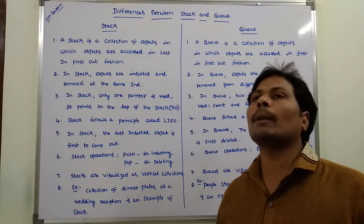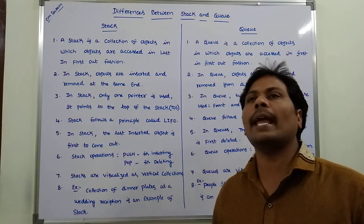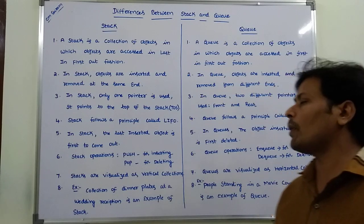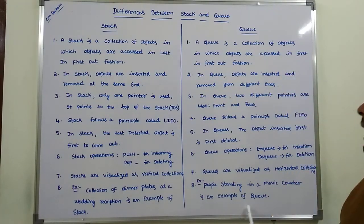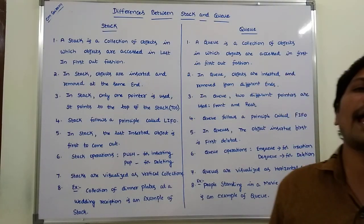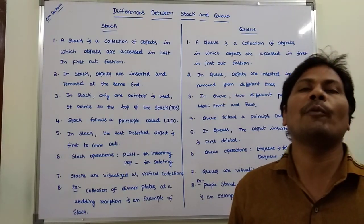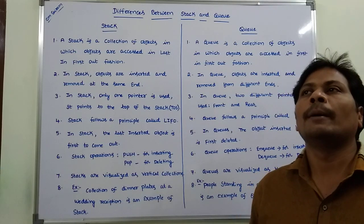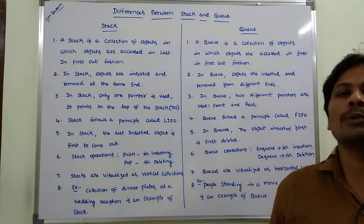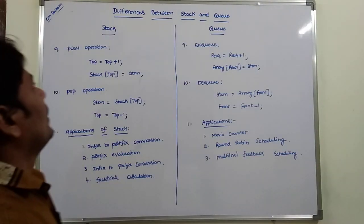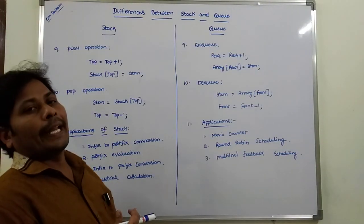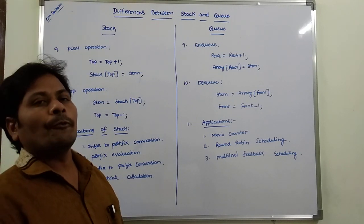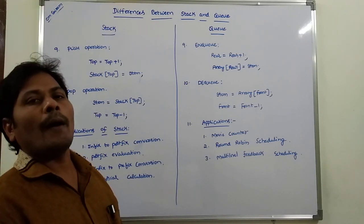An example for stack is a dinner plate in a marriage. An example for queue is people standing in a movie counter or a bus counter.